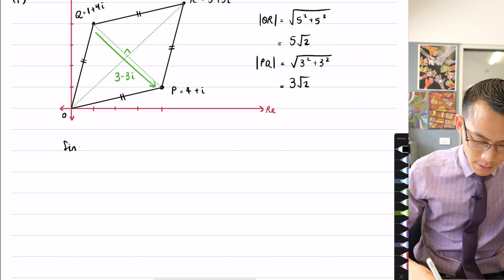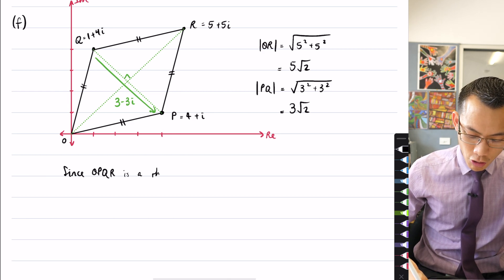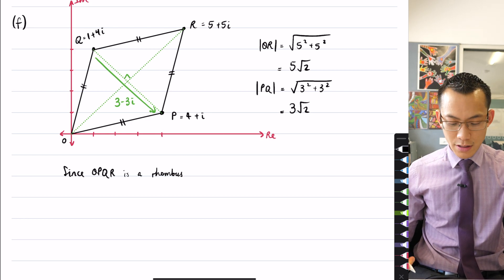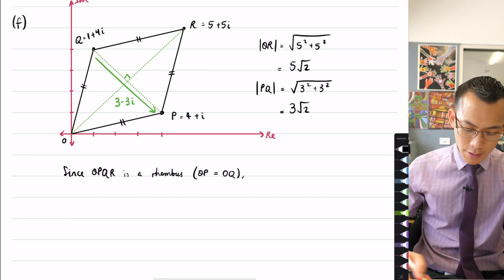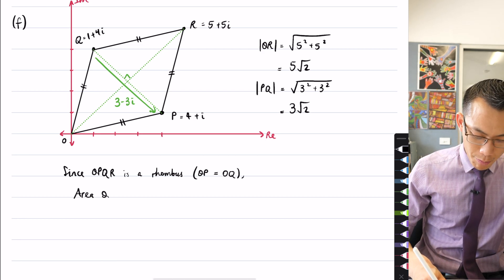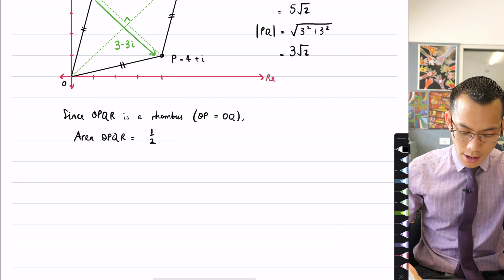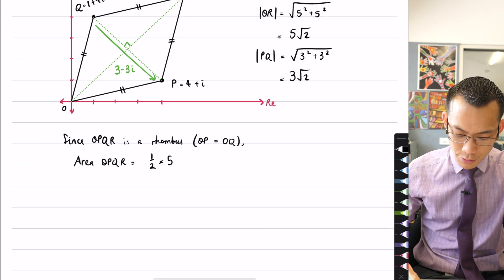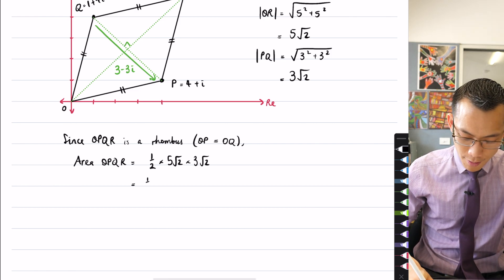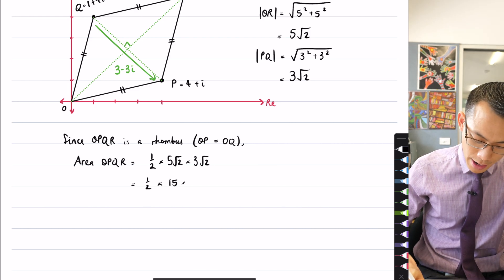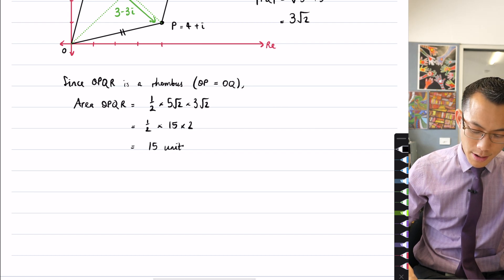So I can say now, since OPQR is a rhombus, they already told me it was a parallelogram, and now I'm reasoning that it's a rhombus, because OP equals OQ, the area of OPQR, I can appeal to the area formula for a rhombus, which is going to be half times the diagonals, which we just worked out were 5 root 2 and 3 root 2. So you're going to get a half times 15 from the 5 times 3, and 2 from the root 2 times root 2, and that gives you the 15 units squared as required.